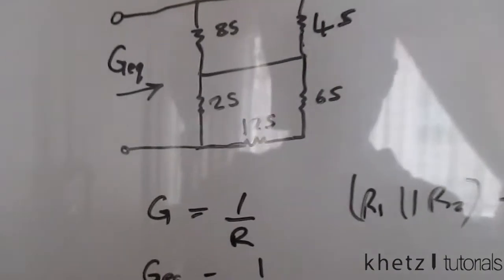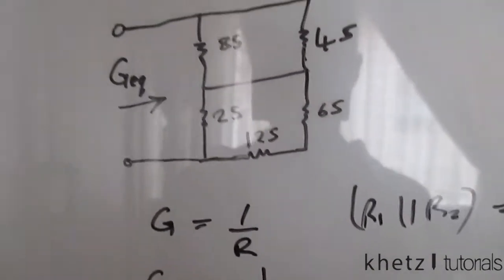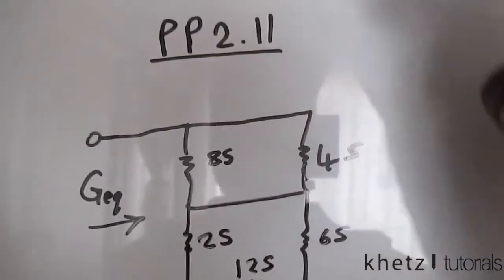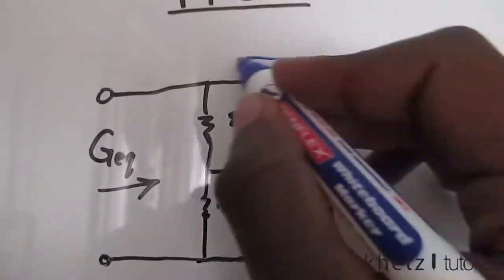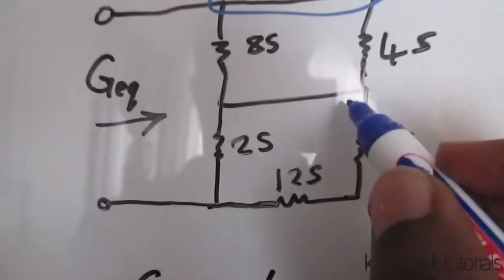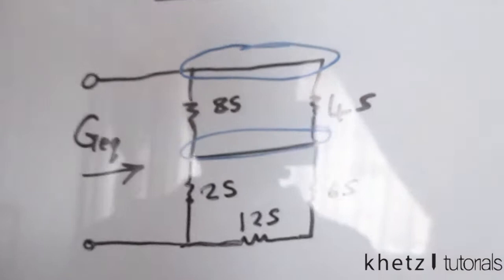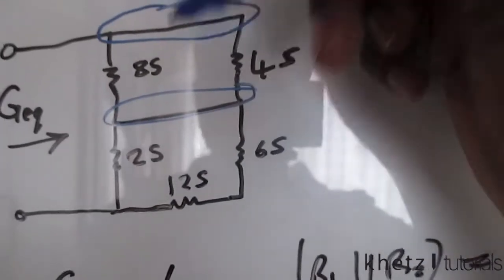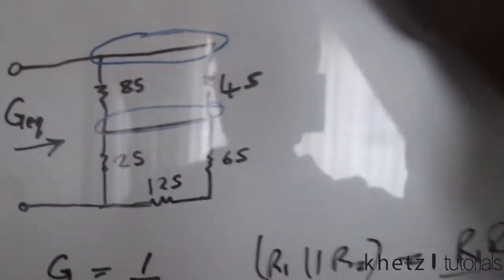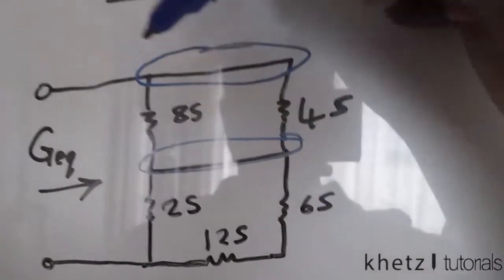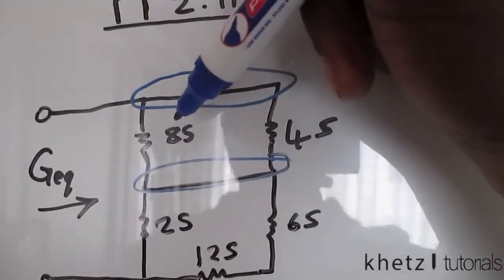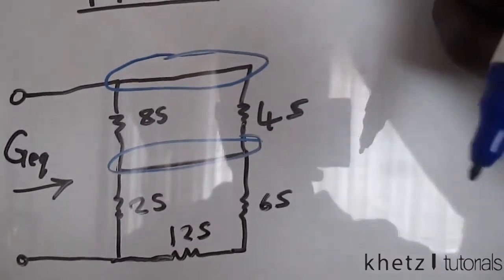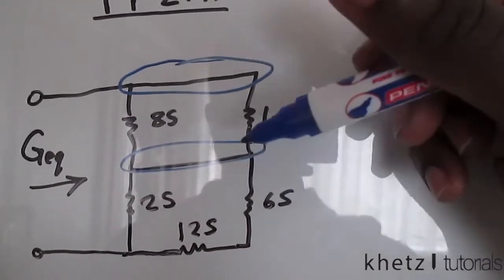I'm just going to switch to new pen. Okay. So we have this node up here and this node down here. So the four Siemens, which is the unit for conductance, the four Siemens and the eight Siemens are in parallel. They share two nodes, that node and that node.